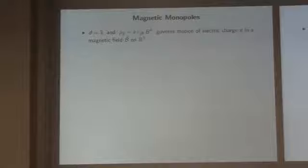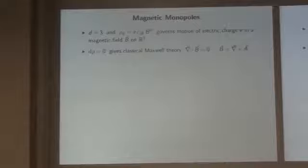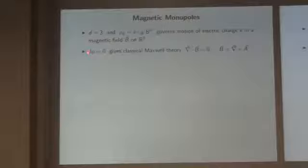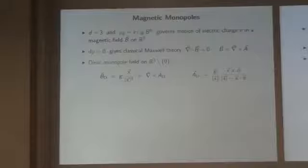That algebra governs the motion of an electric charge in a magnetic field. Now if this magnetic field is a closed two-form, these brackets just tell me standard Maxwell theory — there are no magnetic sources. The closure condition is just the same as saying this two-form is closed. Working on R^3, we can also introduce a globally defined vector potential, a one-form, into the game.